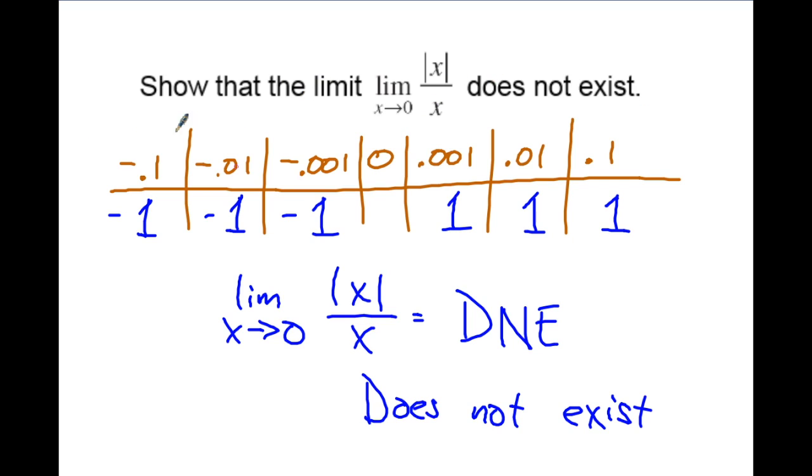As you get closer and closer to zero, you end up with negative one when you approach from the left side, and as you approach from the right side you get positive one. Because these two values are not equal to each other, the limit does not exist. Feel free to put DNE or write out 'does not exist.'